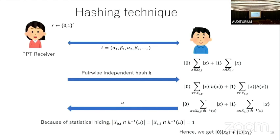When the preimage set has size one, the state collapses to a superposition of just two states x0 and x1, and once we have this quantum state we can run the KMCVY proof of quantumness.